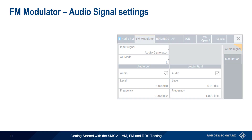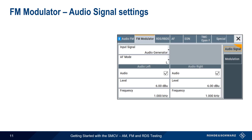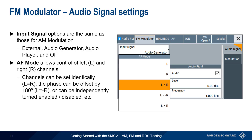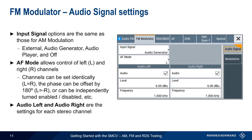The FM Modulator dialog is similar to AM modulation in that it has the same input signal options: external source, internal audio generator, and audio player. But unlike AM, the FM modulator also enables selection and configuration of the left and right audio channels. These can be set identically or with inverted phase, and can be independently enabled or disabled. The parameter groups Audio Left and Audio Right are used to configure the parameters for each of these stereo channels.